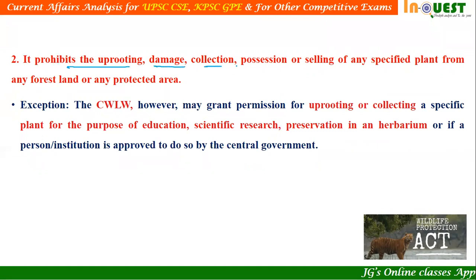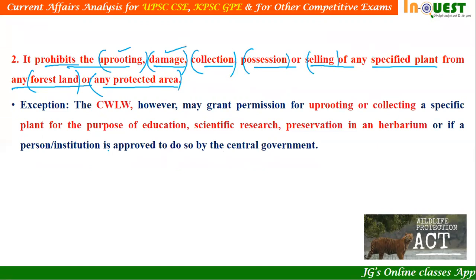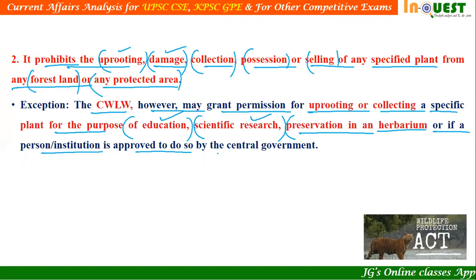Feature number two: the act prohibits uprooting, damage, collection, possession or selling of any specified plant from any forest land or protected area. However, the Chief Wildlife Warden may grant permission for uprooting or collecting a specific plant for the purpose of education, scientific research, or preservation in a herbarium, or if any person or institution is approved to do so by the central government.